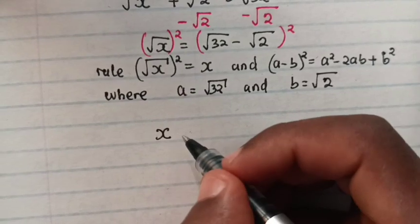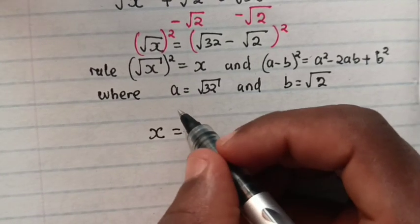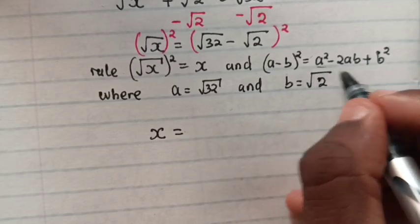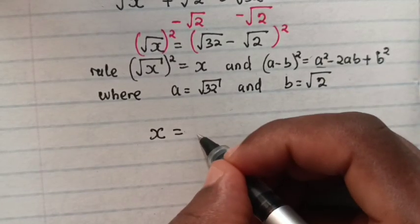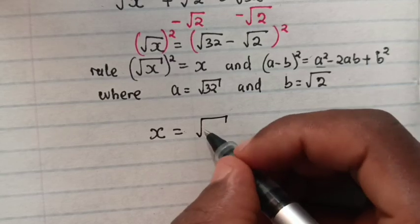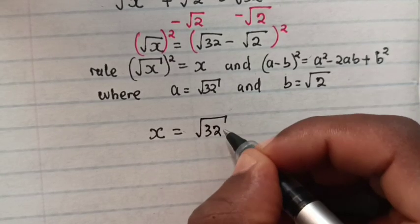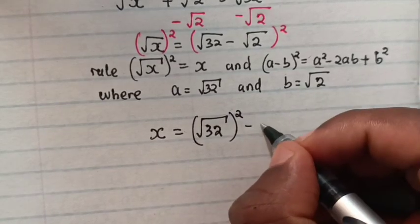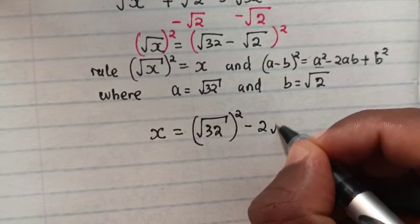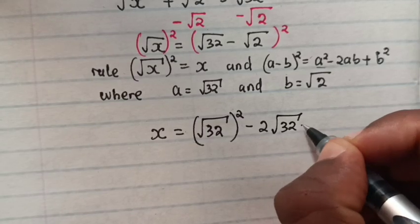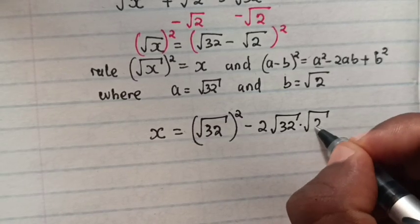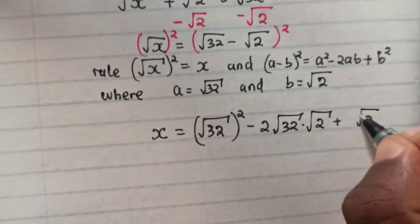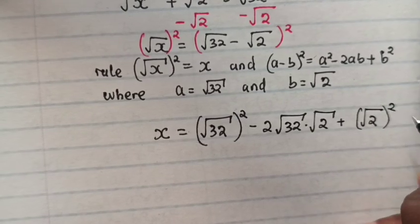So x from the rule will be equal to a squared, where our a is square root of 32 bracket squared, minus 2 times a which is square root of 32, times b which is square root of 2, plus b squared which is square root of 2 bracket squared.